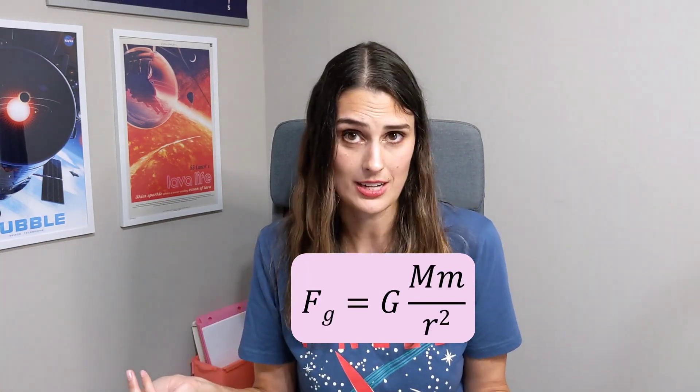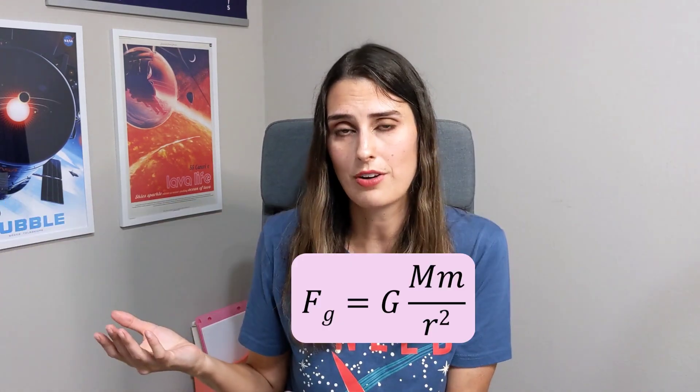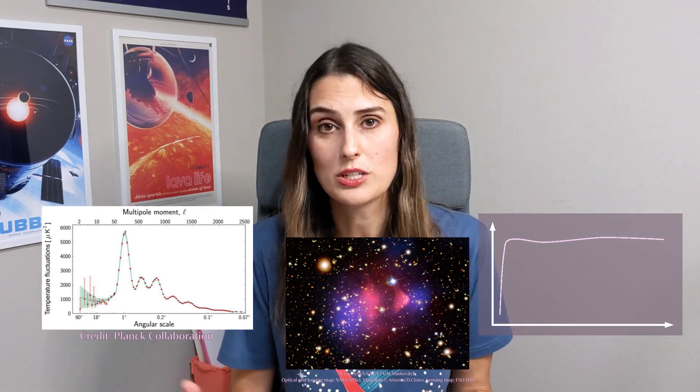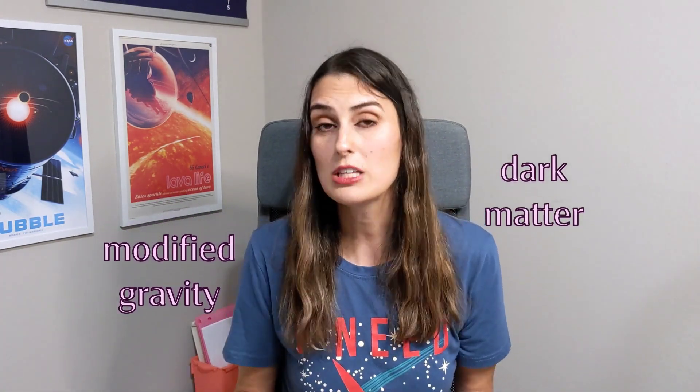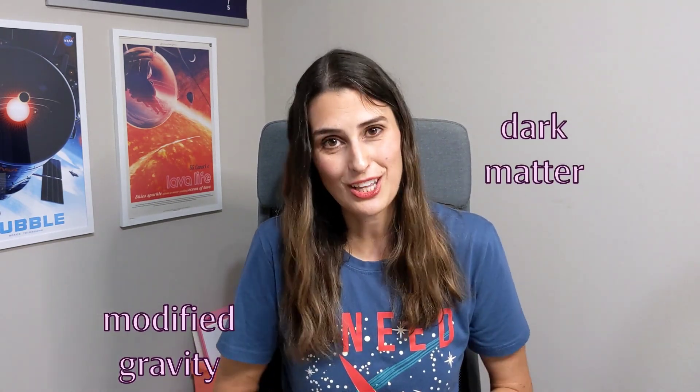So there you have it: the rotation curves of spiral galaxies are flat, not Keplerian, indicating a large amount of unseen mass extending far beyond the visible concentration of matter we can see. One caveat: the reason Keplerian rotation curves behave as they do is Newtonian gravity, and it's possible gravity in a galaxy is just different. Modified gravity theories could explain flat rotation curves without invoking dark matter. However, rotation curves are only one piece of evidence — any modified gravity theory must also explain all the other pieces of evidence for dark matter. So far, none have done that as well as dark matter theory, which remains the leading theory among astronomers and cosmologists.